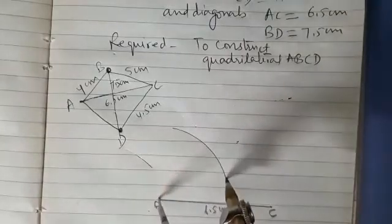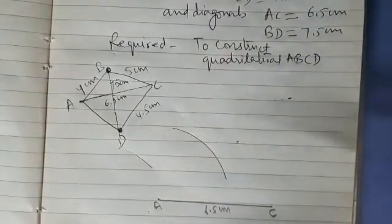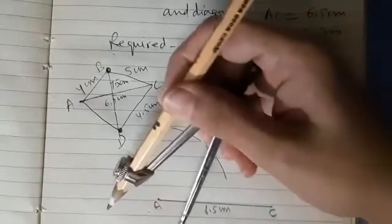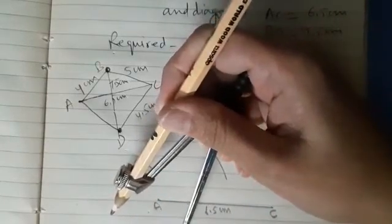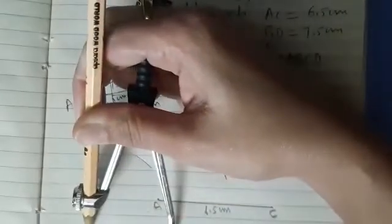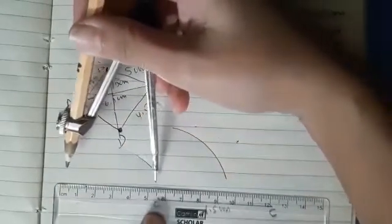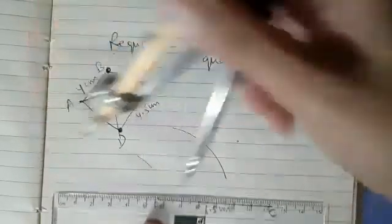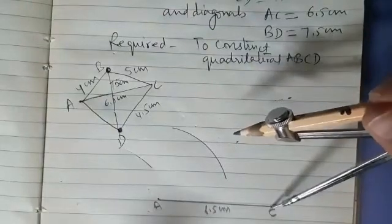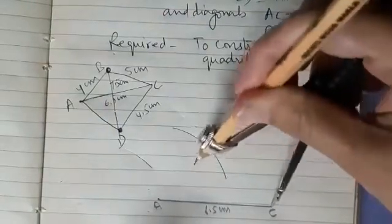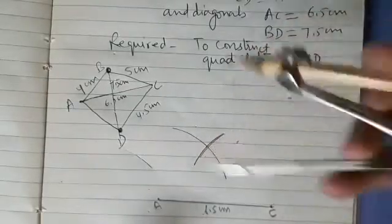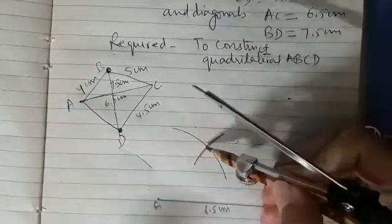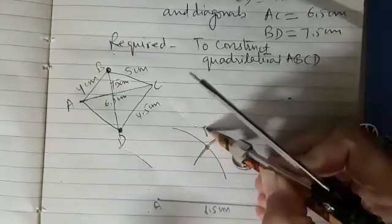So this is how we have drawn an arc. Now with C as center and radius 5 cm. You know it is given BC as 5 cm. So we have to now get the point B. So this is 5 cm. You can see how we have done this. With C as center and radius 5 cm intersect the previous arc. So this point of intersection is B now.